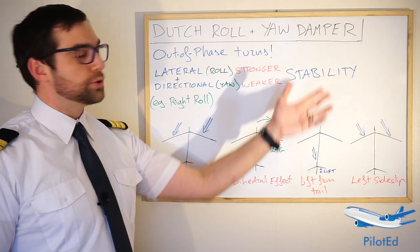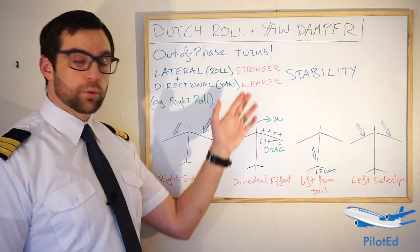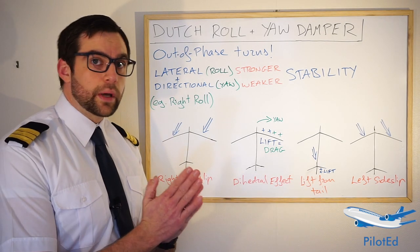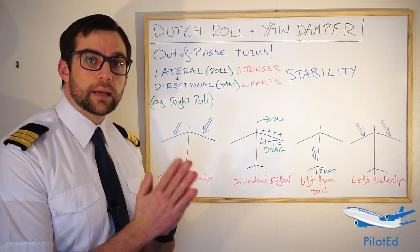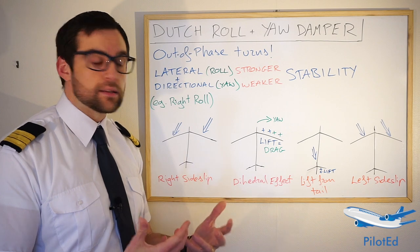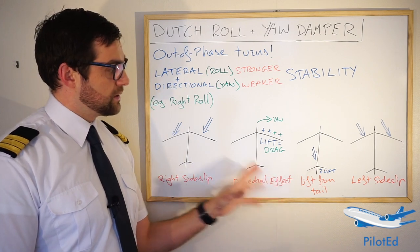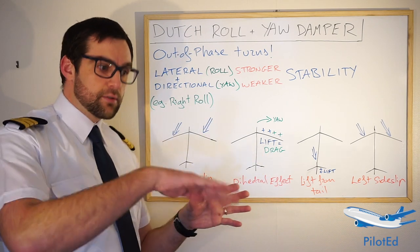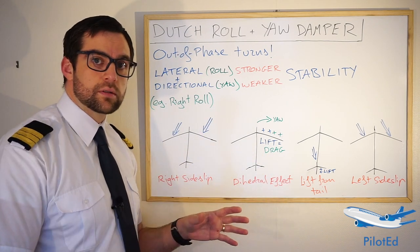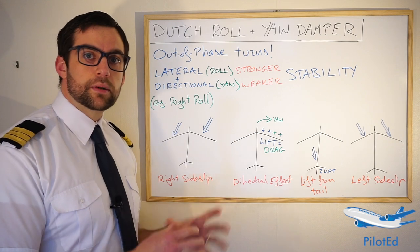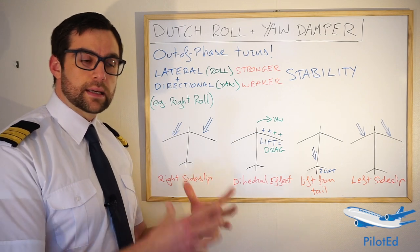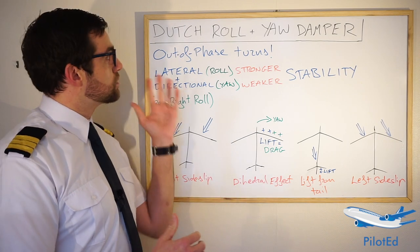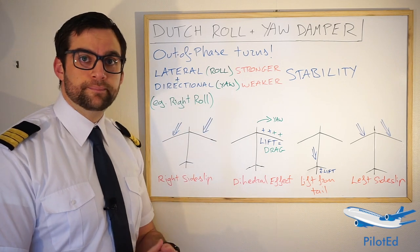Most modern aircraft have what we call yaw dampers. What a yaw damper does is move the rudder very quickly — much more rapidly and reactively than a human could even sense — to correct Dutch roll, so that we don't get into that series of fluctuations. As we roll the aircraft, the yaw damper system automatically inputs the correct amount of rudder to stop any Dutch roll from developing.